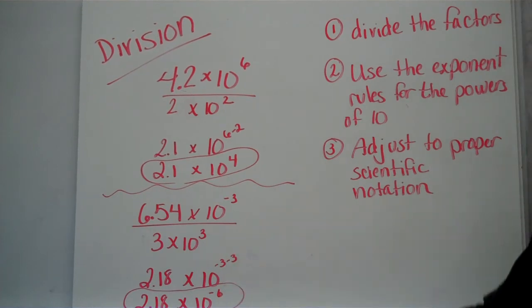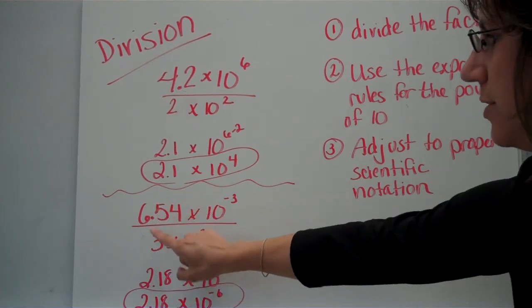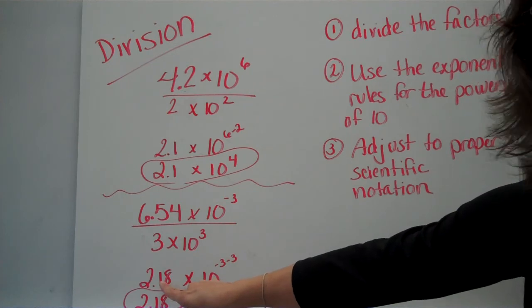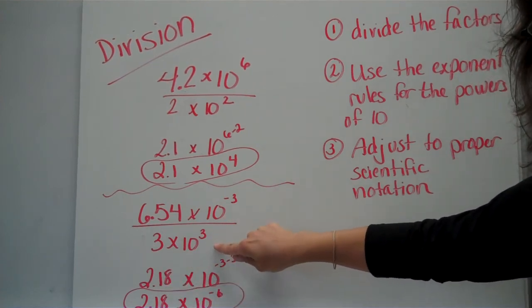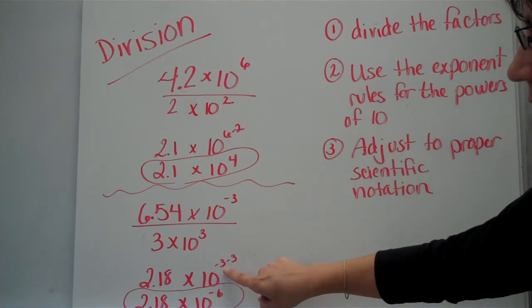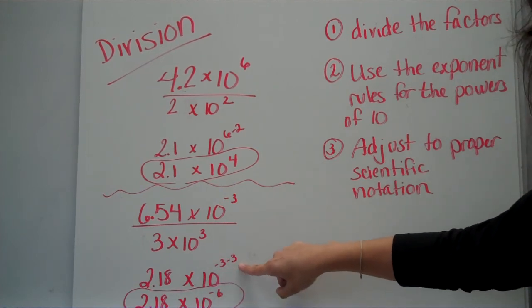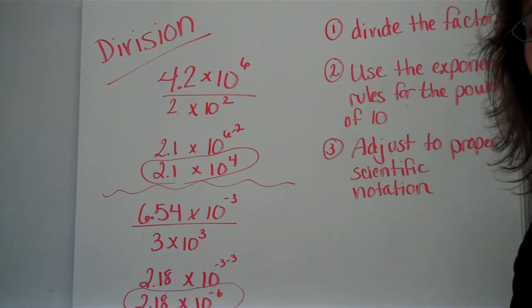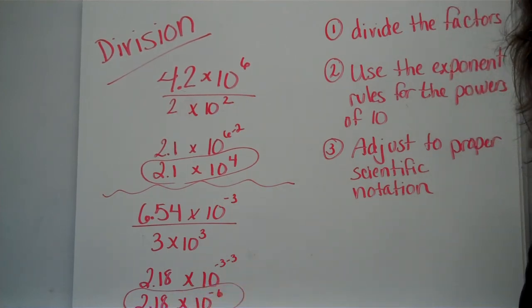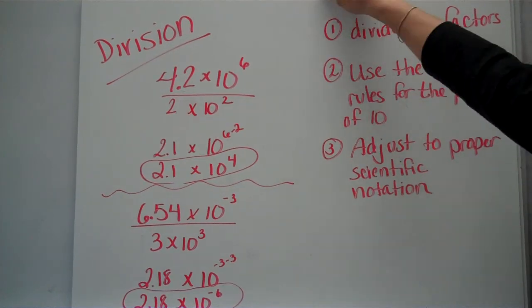Here's another example using a negative. Divide the two factors. You can use your calculator for that one. And now for the powers of 10, you're going to subtract them. So negative 3 minus 3, remember those integer rules. It's negative 6. Again, my factor is between 1 and 10. So I'm all set and I don't need to do any more movements.